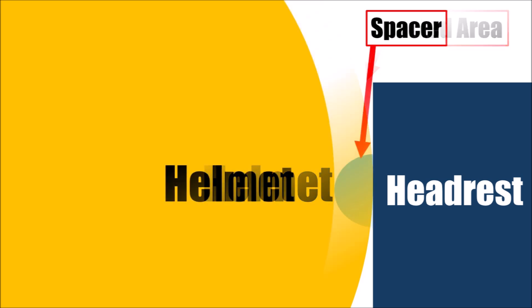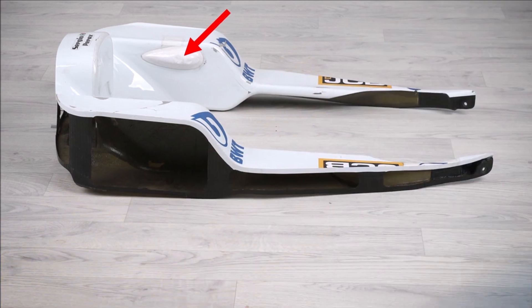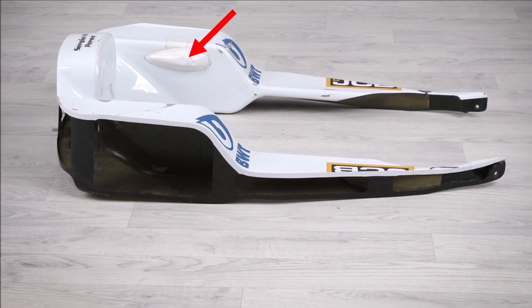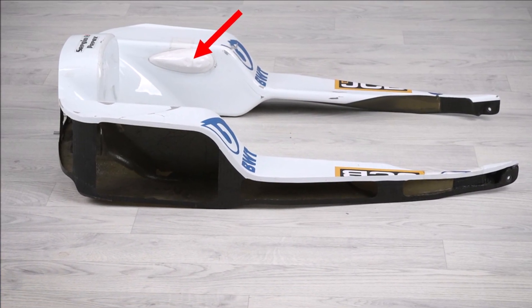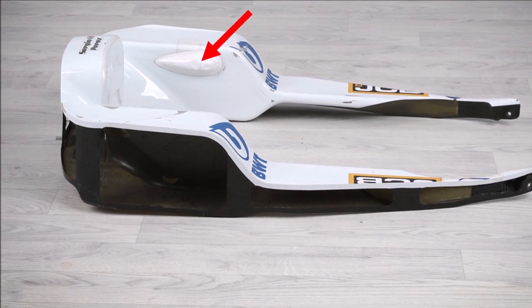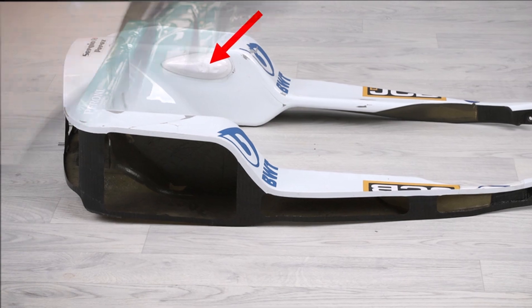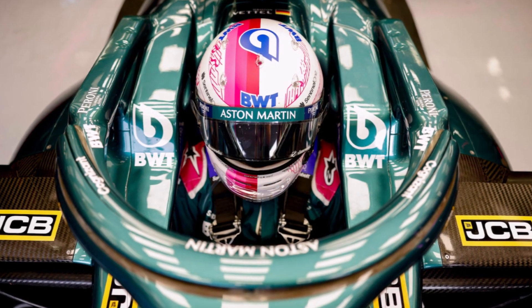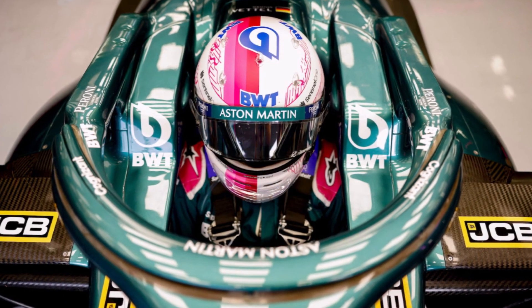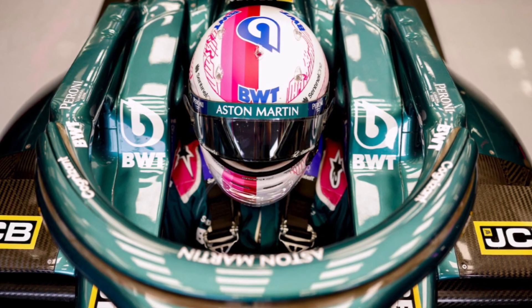To avoid that and to ensure a large enough gap between helmet and headrest, teams designed a spacer. Because it's in the airflow, it needs to have an aerodynamic shape. So with this spacer, the helmet can never get too close to the sidewall and teams can avoid a large separation bubble. On the other hand, the helmet's position can move in a much smaller range, and this helps with correlation between CFD and track.